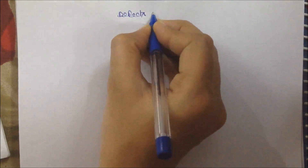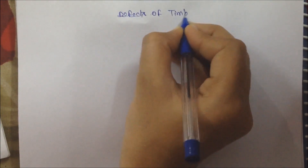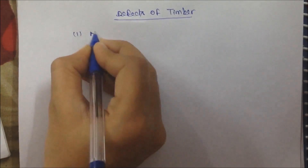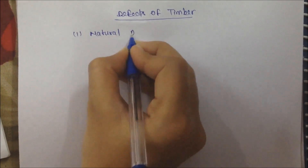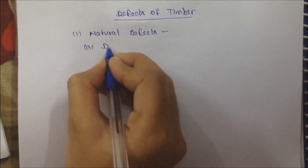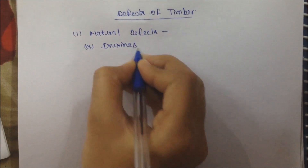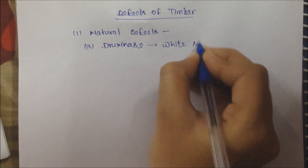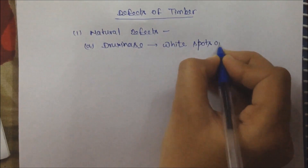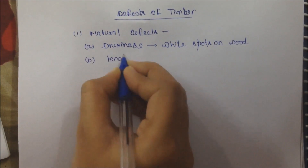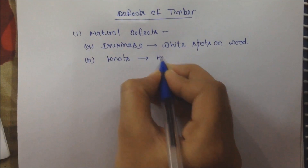Next is Defects of Timber. First is Natural Defects and second is Defects Due to Fungi. In Natural Defects, first is Bruxiness — these are white spots in wood which are concealed by healthy wood. Second is Knots.